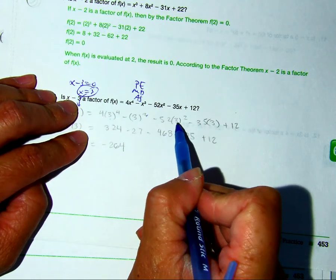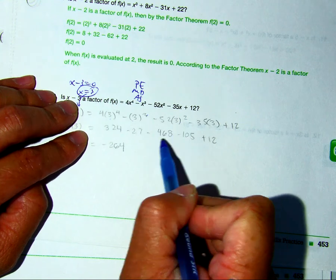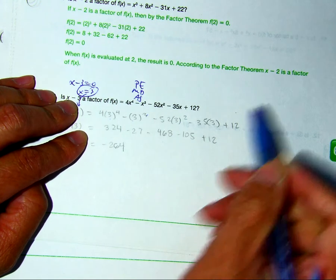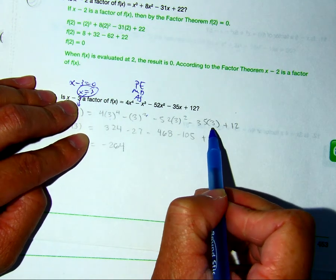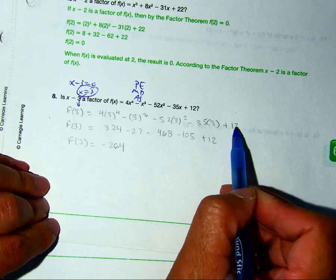I have 3 squared, which is 9, and 9 times negative 52 is negative 468, which is correct. Negative 35 times 3 is negative 105, and then the 12.